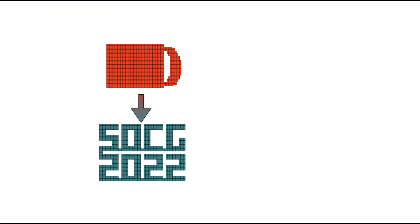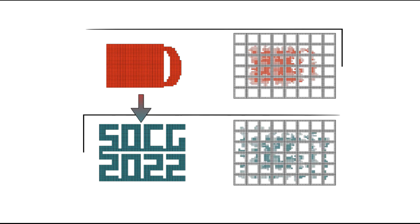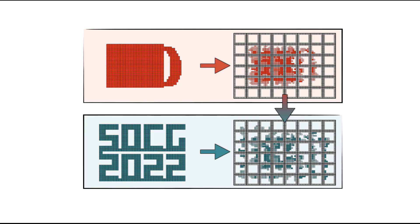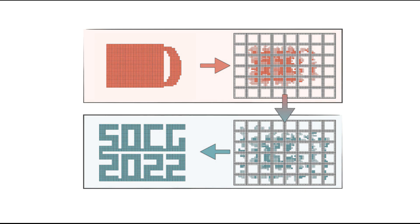Now we turn to a positive result: achieving connected reconfiguration with bounded stretch. The idea is to exploit a globally connected structure called a scaffold. It is based on constant-sized tiles. These tiles can be locally transformed in parallel. Further, we can shift robots between tiles. In the last step, we revert the first step to achieve the original target configuration.